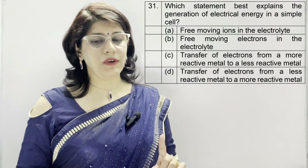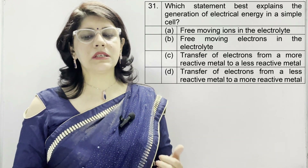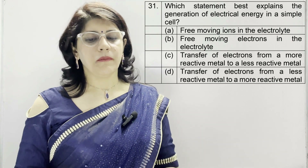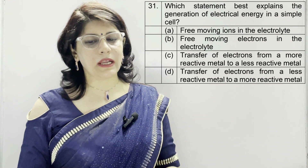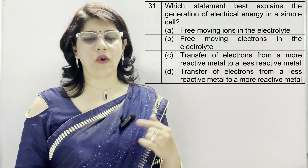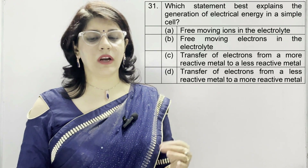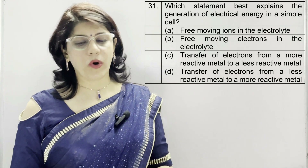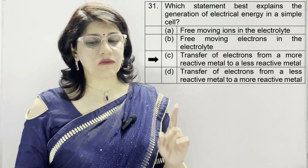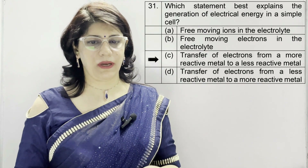Question number 31: which statement best explains the generation of electrical energy in a simple cell? A: free moving ions in the electrolyte. B: free moving electrons in the electrolyte. C: transfer of electrons from a more reactive metal to a less reactive metal. D: transfer of electrons from a less reactive metal to a more reactive metal. The correct option is C — transfer of electrons from a more reactive metal to a less reactive metal.